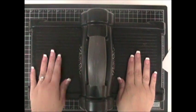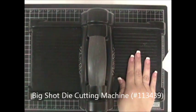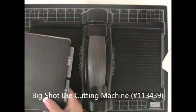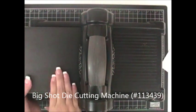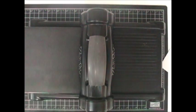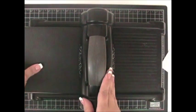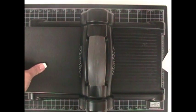So we are now ready to go. The Big Shot is all in place. I am going to now take my sandwich that I have created and I am going to place it right there inside my Big Shot. Now I will hold it gently right there and start cranking.